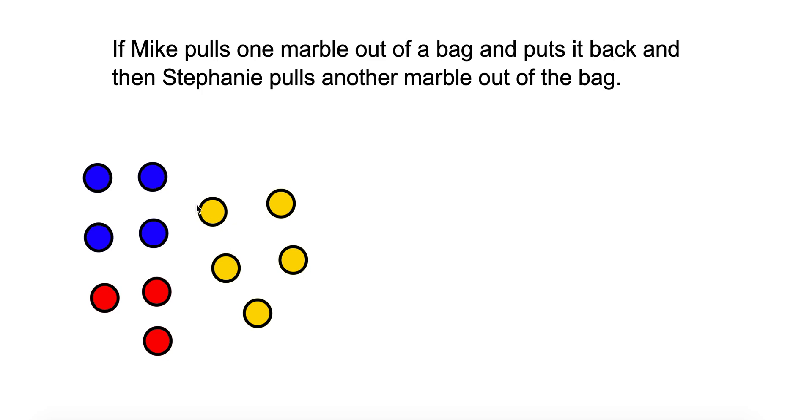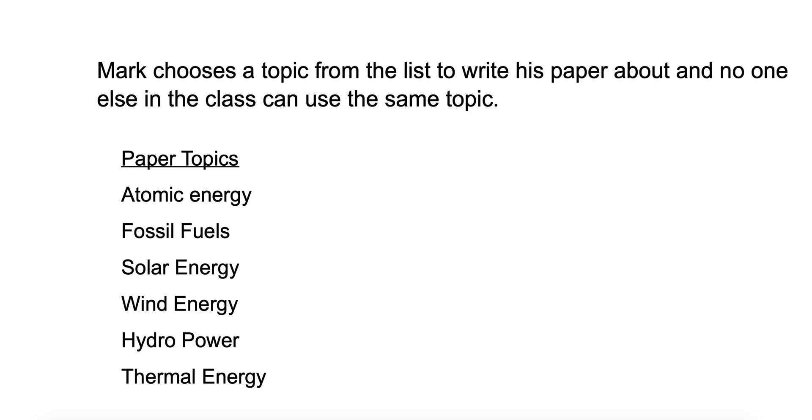Let's look at another example here. Alright, we got a list of paper topics to choose from for a paper for class. Must be a small class. So it says Mark chooses a topic from the list to write his paper about and no one else in the class can use the same topic. Is this independent or dependent?